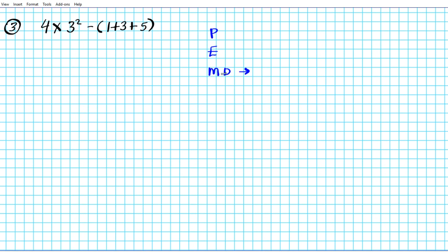Multiplication and division go together from left to right, and addition and subtraction are done at the same time from left to right. We have multiplication, exponent, subtraction, and parenthesis — so we do the parenthesis first. Within the parenthesis we have two additions; we start from left to right. 1 plus 3 is 4, so we have 4 plus 5. Bring down 4 times 3 squared.